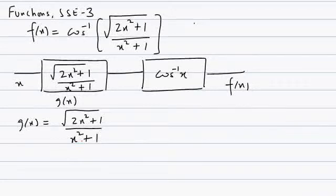This is question number three from the suggested short example functions topic. We are supposed to find the range of f(x) where f(x) is defined as cos inverse of square root of 2x² plus 1 divided by x² plus 1.